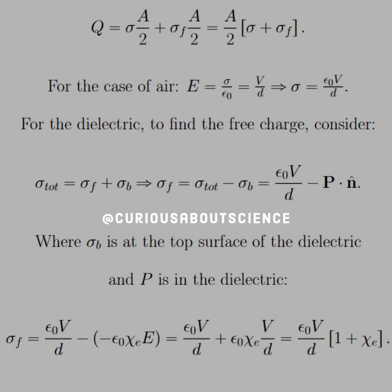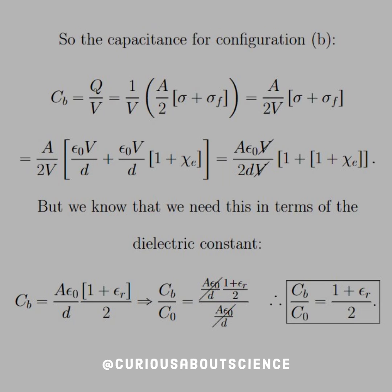But we also know that we can rewrite that later in terms of epsilon. So the capacitance for configuration B is equal to Q over V, which is 1 over V times the A over 2 with the surface charges.